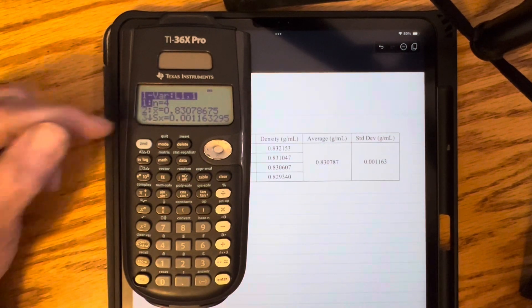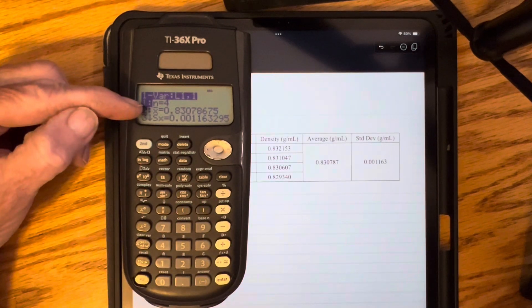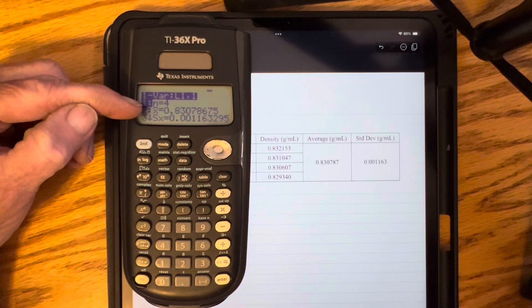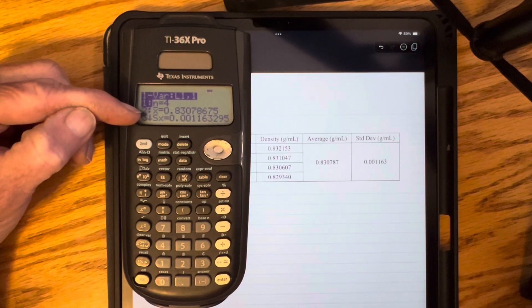And here are my results. So this first line, n equals 4, tells me how many data points I had entered. The second line, x bar, is the average, 0.83078675.